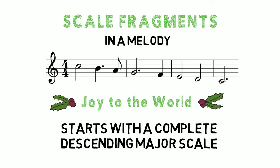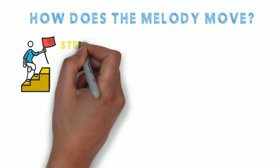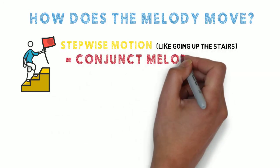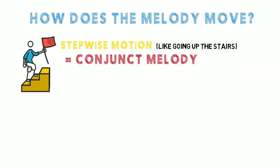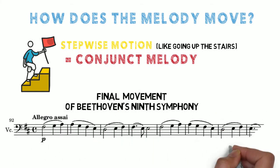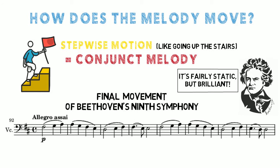You should also consider how the melody moves. It could be stepwise, like going up steps or stairs, and we call this a conjunct melody. A good example of that is the final movement of Beethoven's Ninth Symphony. You could also consider this to be a fairly static phrase.